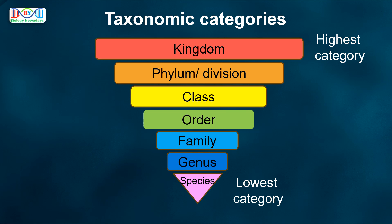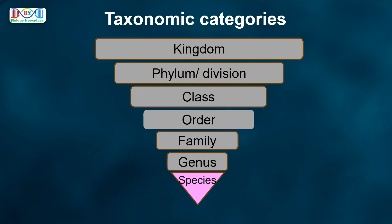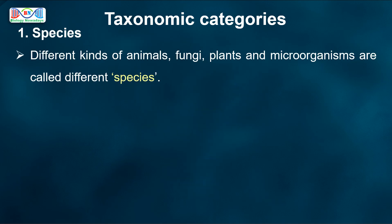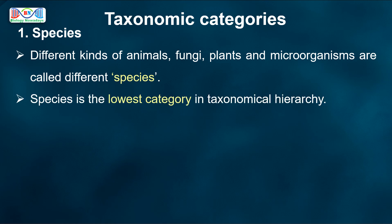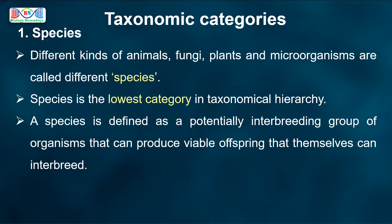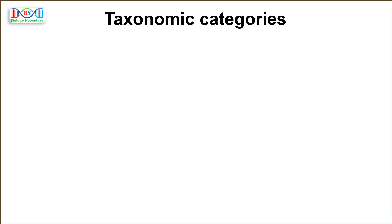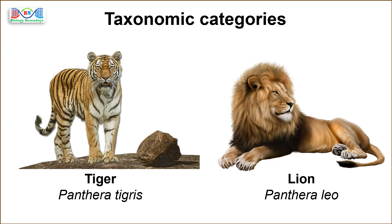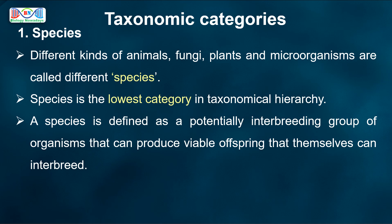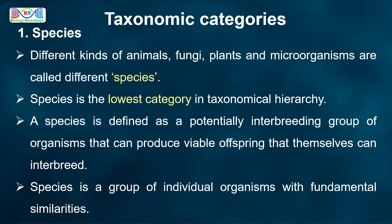Now let's learn about each category in detail. Different kinds of animals, fungi, plants and microorganisms are called different species. Species is the lowest category in taxonomical hierarchy. A species is defined as a potentially interbreeding group of organisms that can produce viable offspring that themselves can interbreed. Thus, animals of two different species, like a tiger and a lion, cannot interbreed, while animals of the same species can. So species is a group of individual organisms with fundamental similarities.